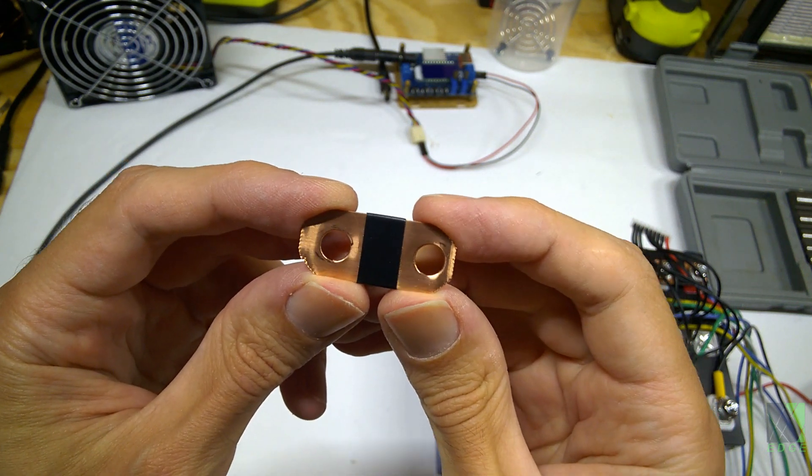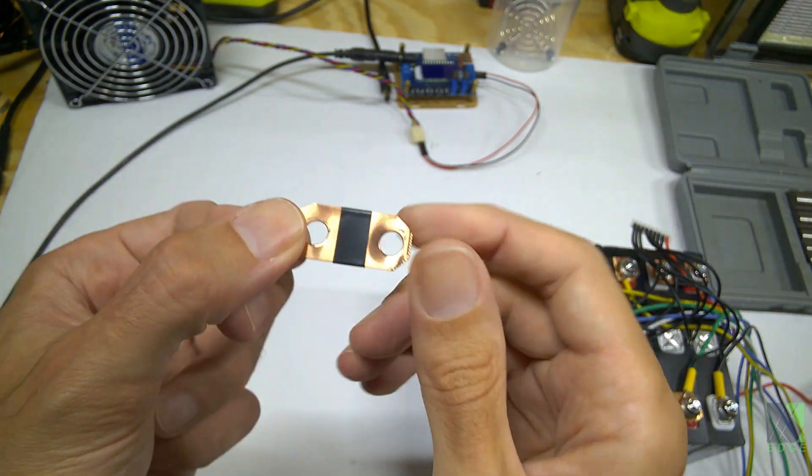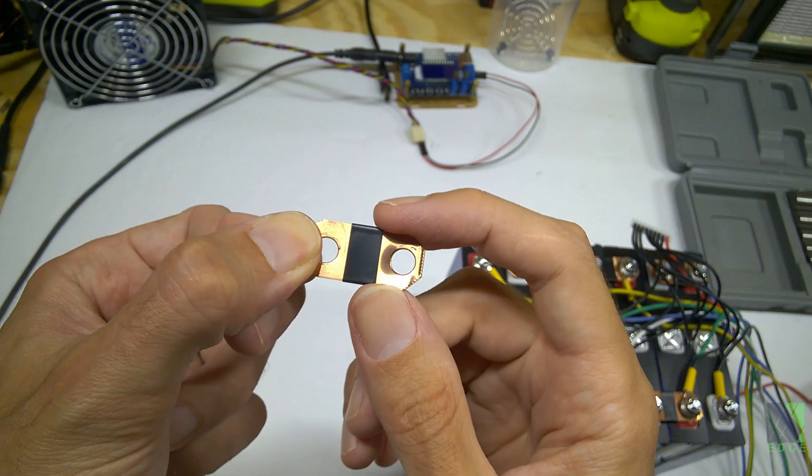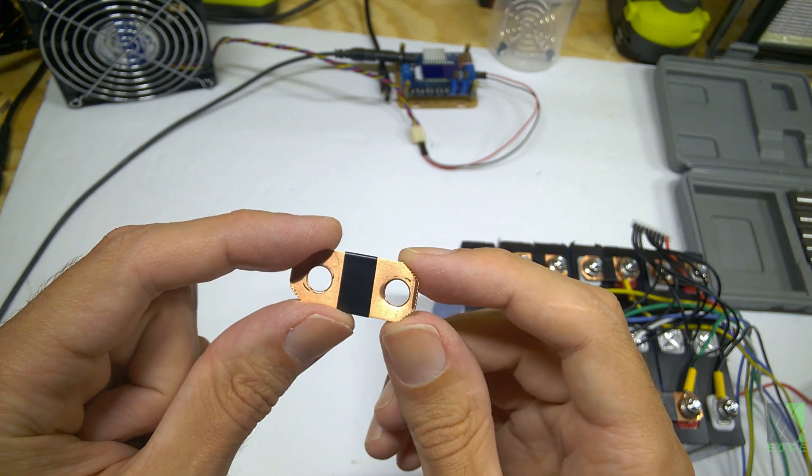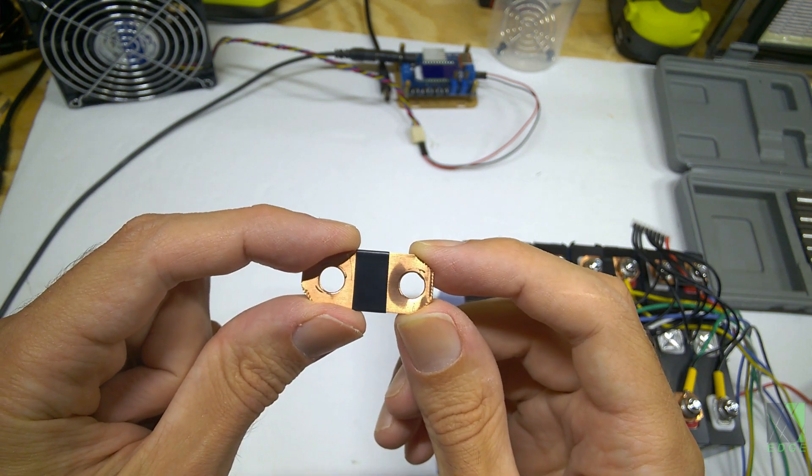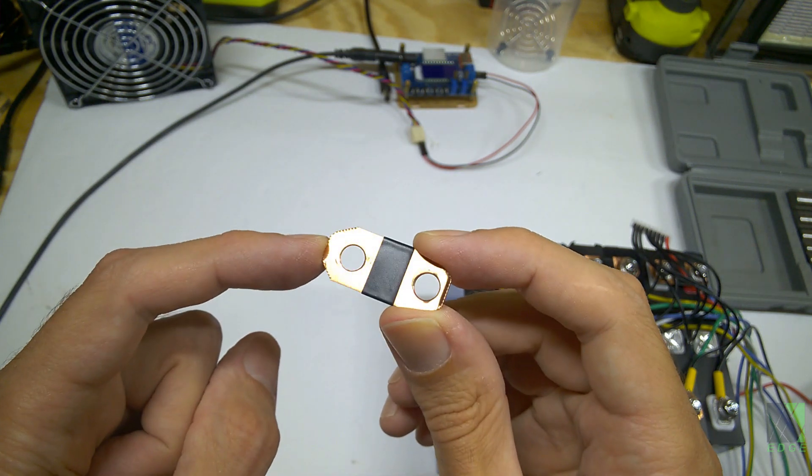However, this is a custom-made bus bar. You can put some heat shrink or something around the middle. It's really quick to make these bus bars once you figure out how to do it, and you can set up a little assembly line and really pump these out.